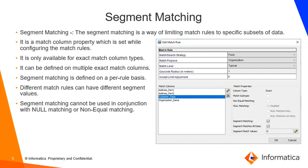Segment Matching is a way of limiting match rules to specific subsets of data. For example, you could define different match rules for customers in different countries by using Segment Matching to limit certain rules to specific country codes only. Segment Matching is configured on a per-rule basis and applies to both ExactMatch and FuzzyMatch base objects. Segment Matching is a matchColumn property which is set while configuring the match rules.